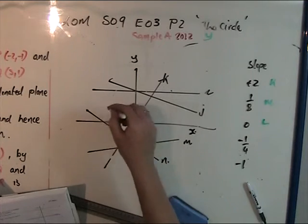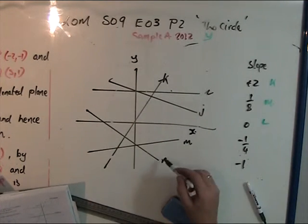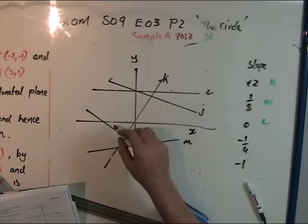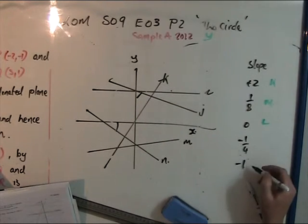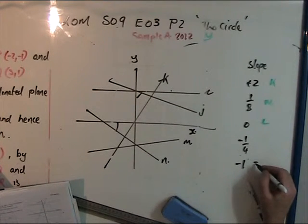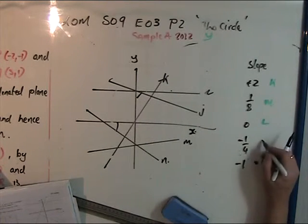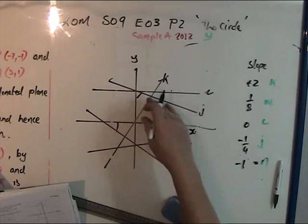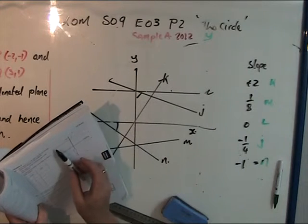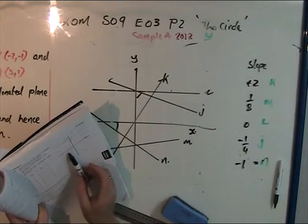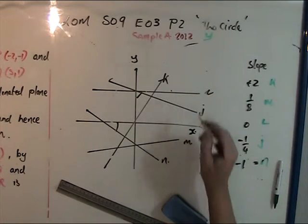For negative slopes: minus a quarter means going from left to right downward. This line has a greater angle, so this is N with slope -1/4. The slighter angle is J with a slight slope down. This has a more acute angle.